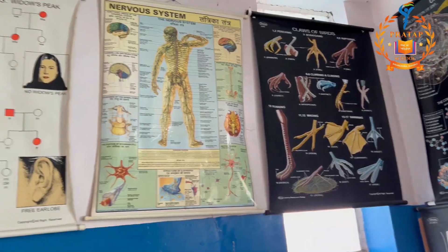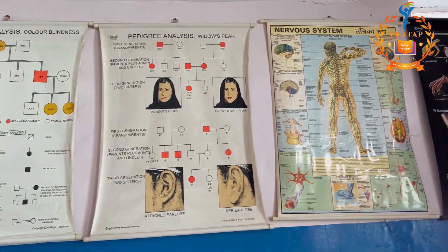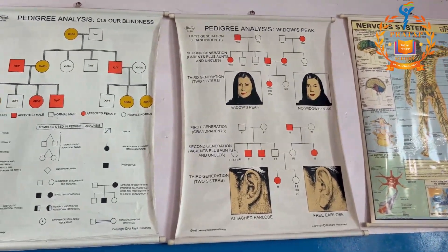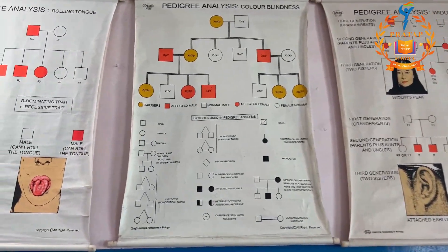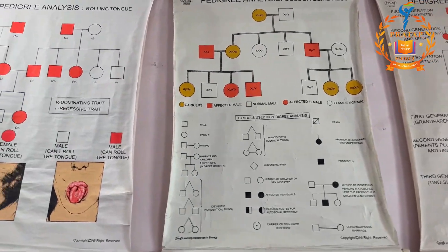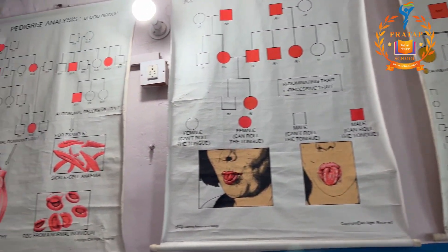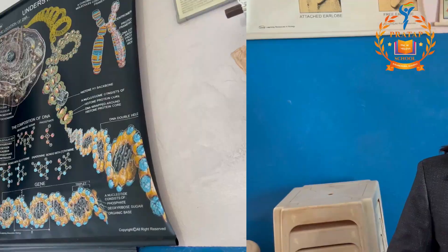We have this chart which shows pedigree analysis, through which we can determine the probability of an offspring being affected or being a carrier of a certain kind of disease, and how their progeny can be affected in different generations.